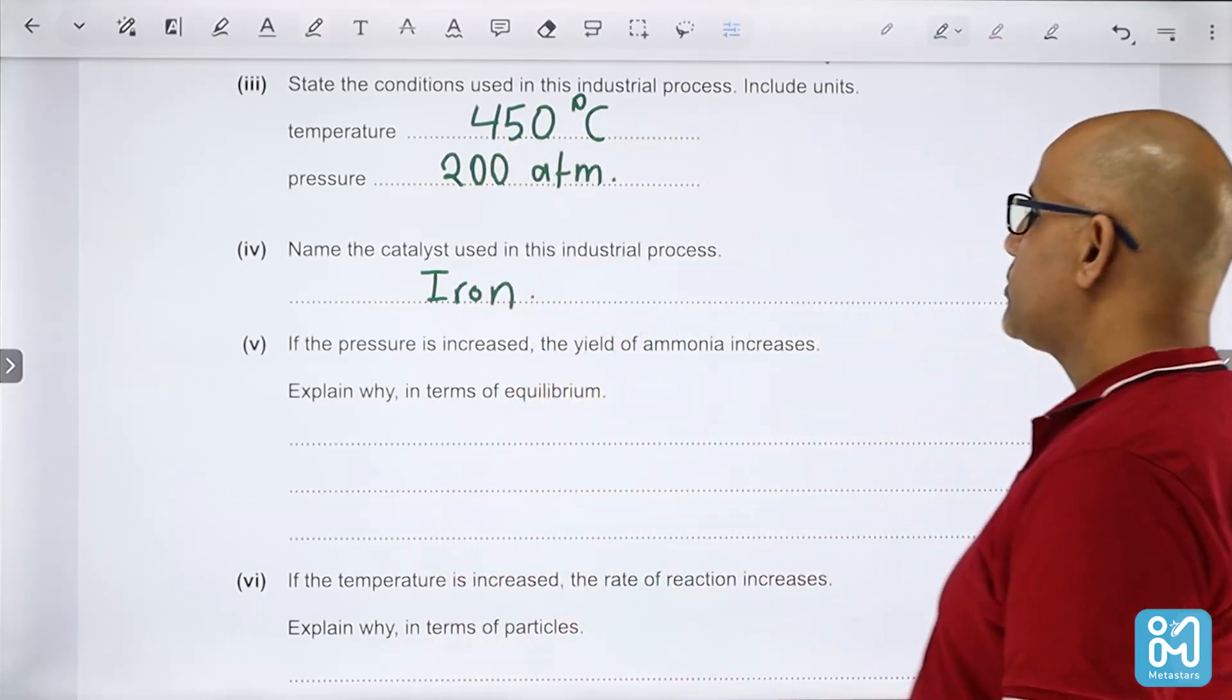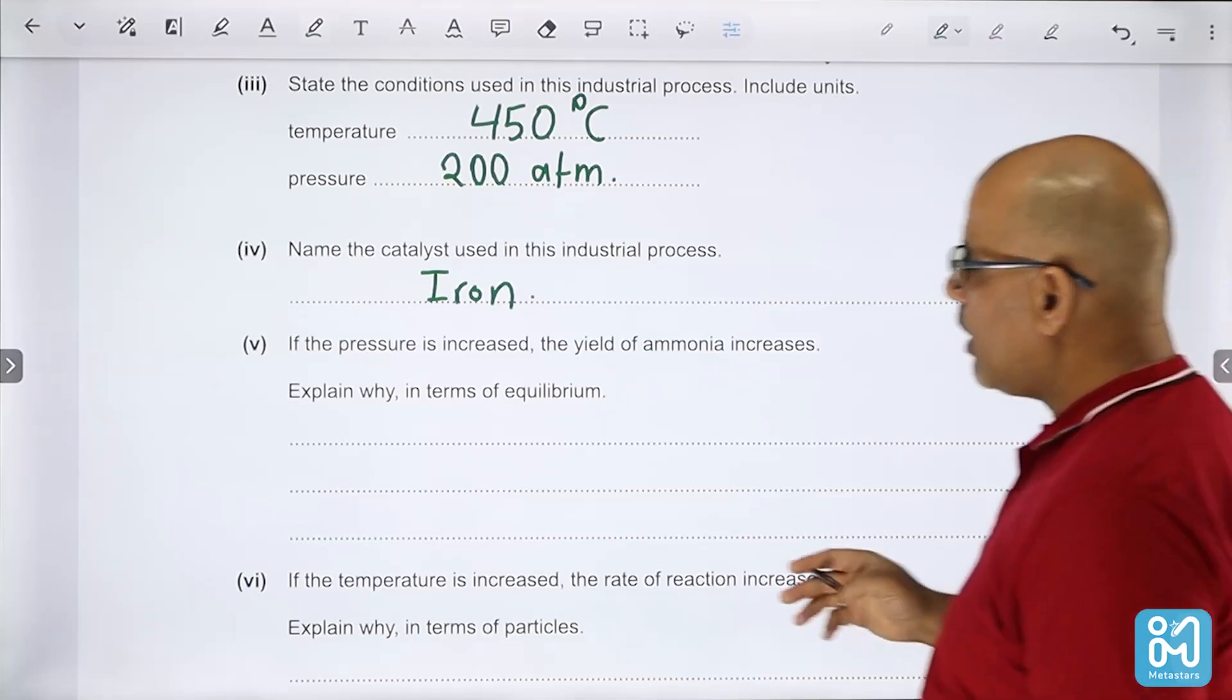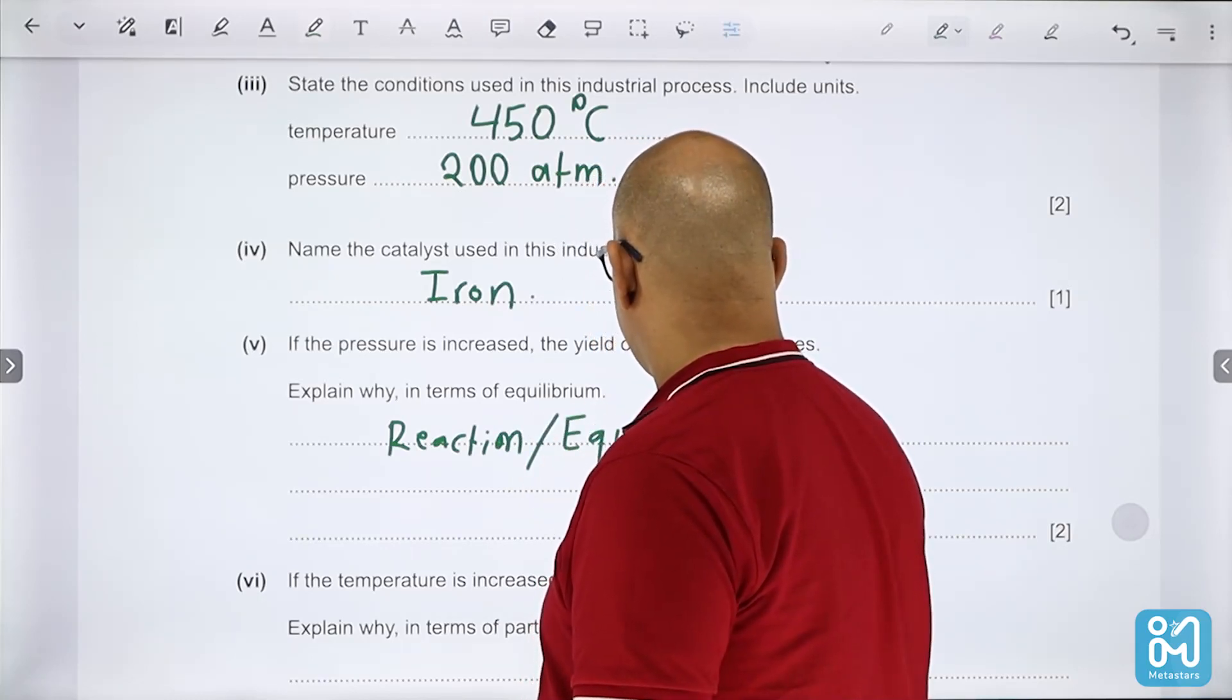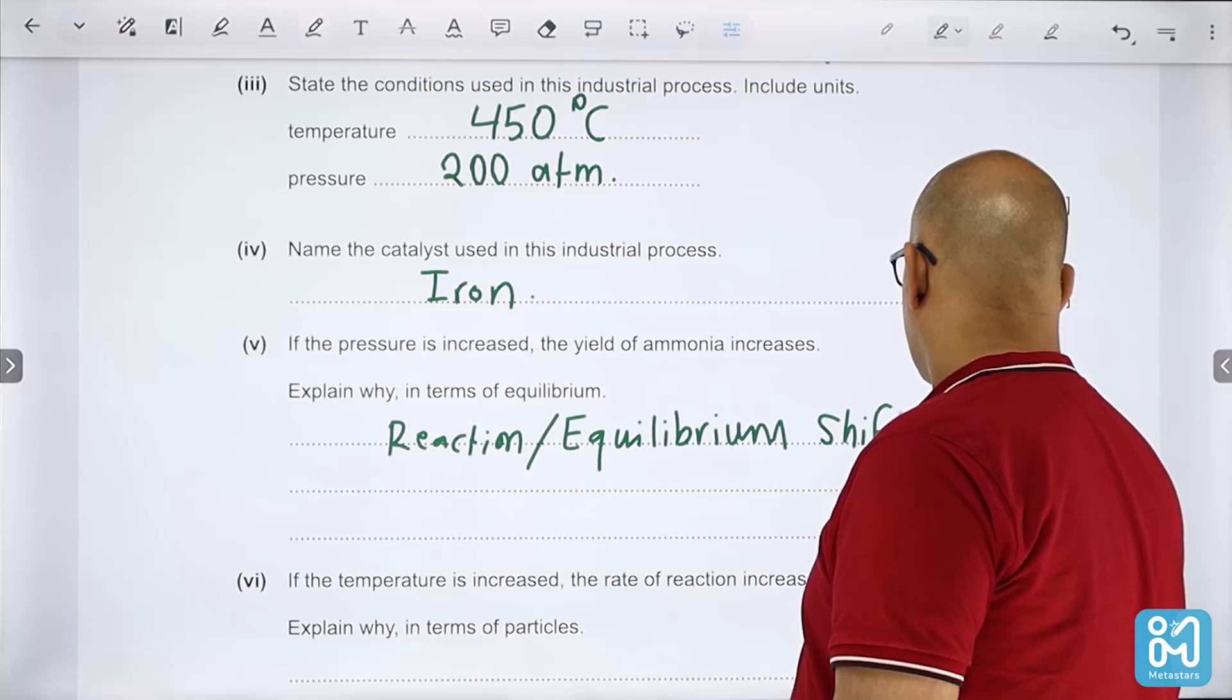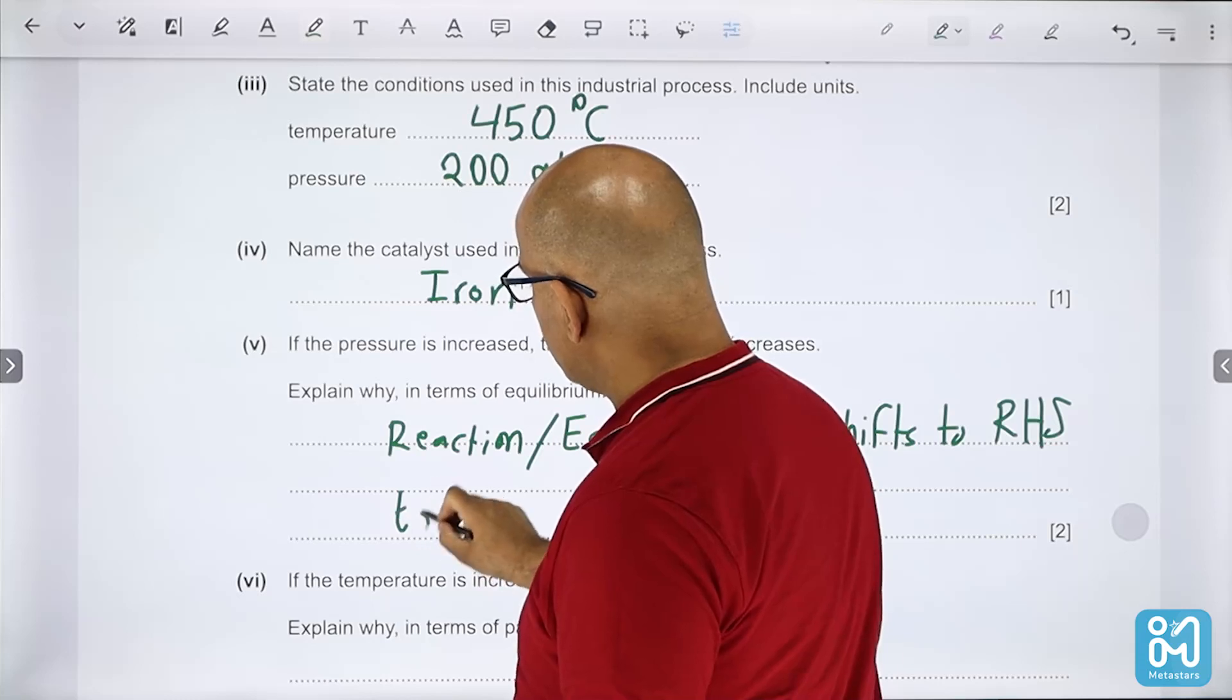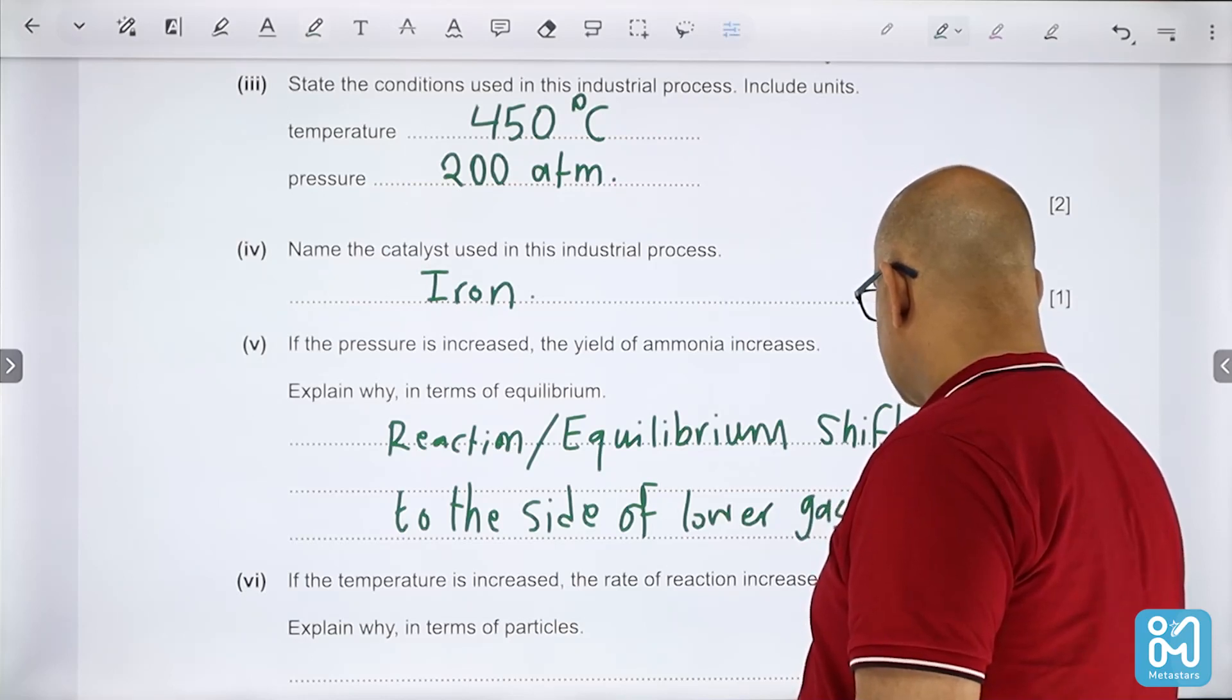State the conditions used in this industrial process. You shall memorize some things in chemistry. We are talking about 450 degrees Celsius and the pressure is 200 atmospheres. Name the catalyst used in this process - it's iron. If the pressure is increased the yield of ammonia increases. Explain why in terms of equilibrium: the equilibrium is shifted to the right-hand side because it shifts to the side of lower gas moles.